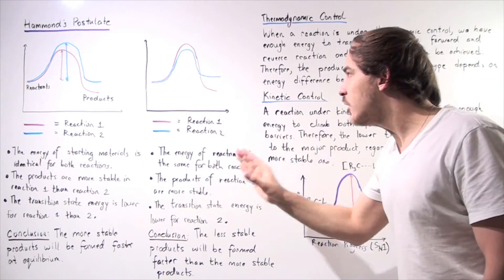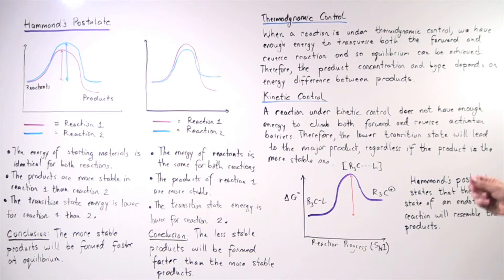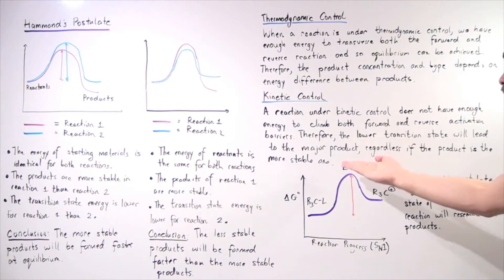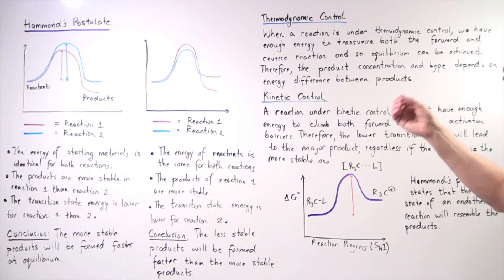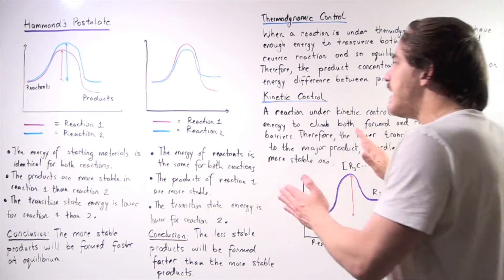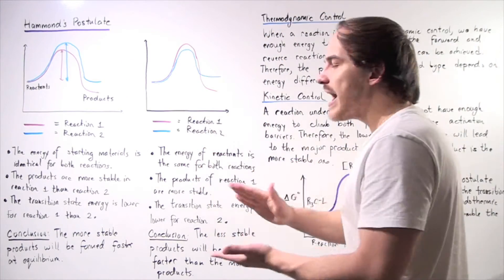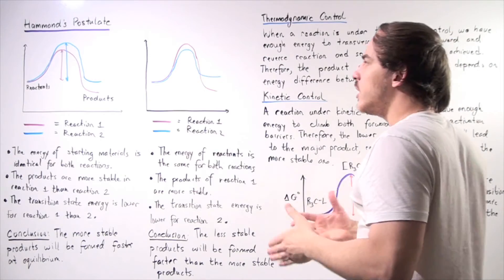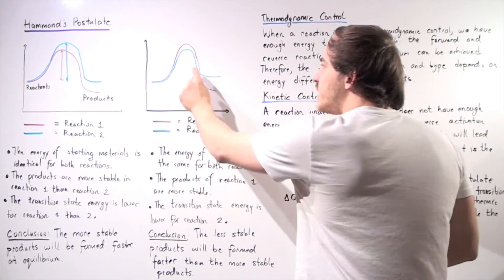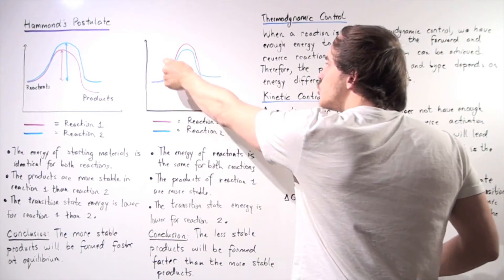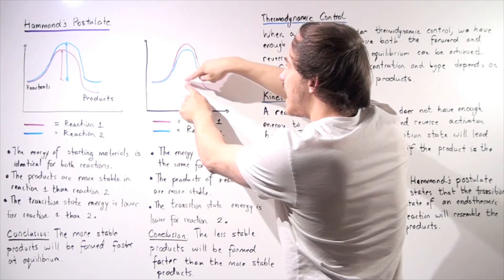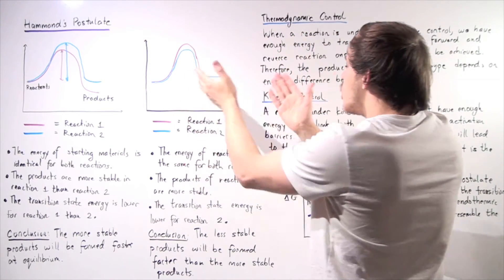Under kinetic control, we have a different situation. A reaction under kinetic control does not have enough energy to climb both forward and reverse activation barriers — we have very little energy. Therefore, the lower transition state will lead to the major product, regardless of whether the product is more stable. In situation two under kinetic control, the pathway with the lower activation energy will be more likely to occur. Because reaction two has a lower activation energy, reaction two will be favored even though its products are less stable. The higher transition state cannot be achieved because we don't have enough energy.